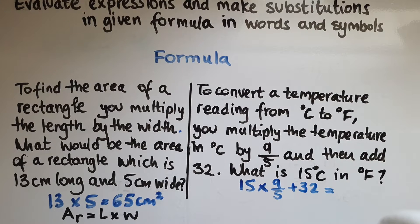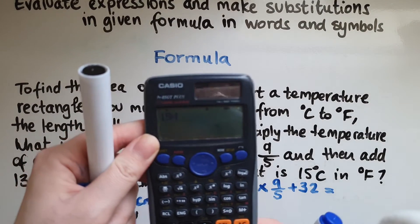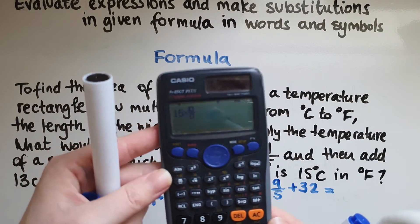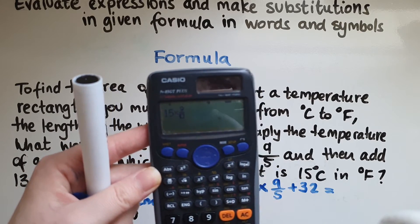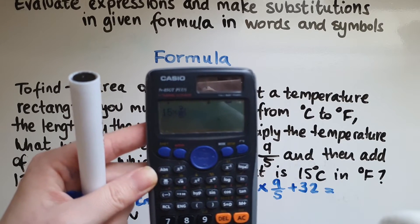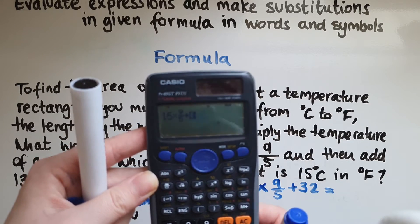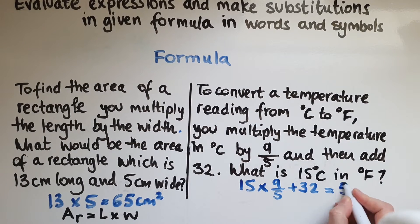So we do that in a calculator: 15 times 9 over 5, add 32, gives us 59. 59 degrees Fahrenheit that is.